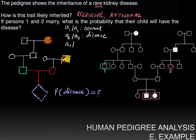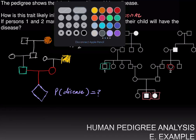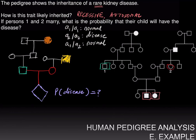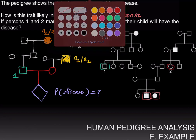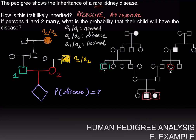And A1 over A2, the phenotype must be normal, since we inferred that this is a recessive trait, so the heterozygote must not have the disease. We can immediately write down that the grandmother of individual one must be A2 over A2, whereas the father of individual two is also A2 over A2.